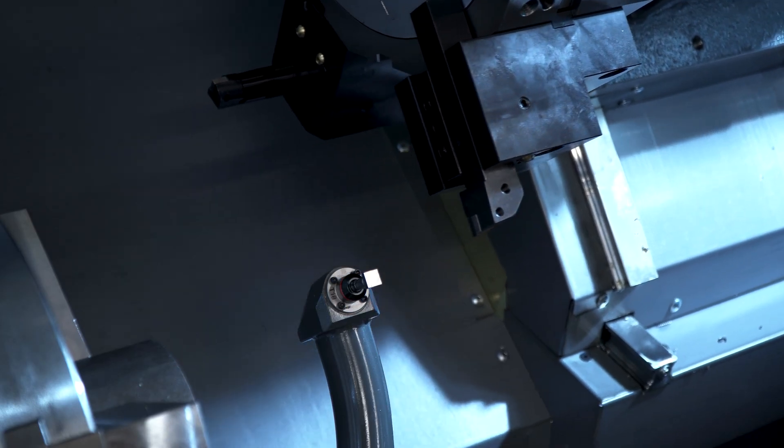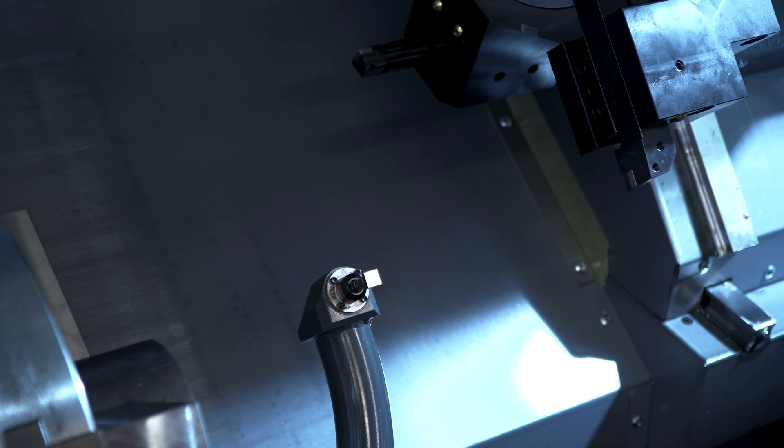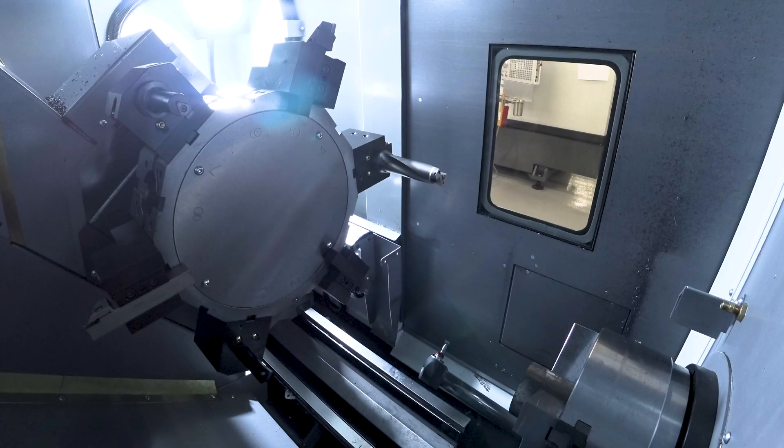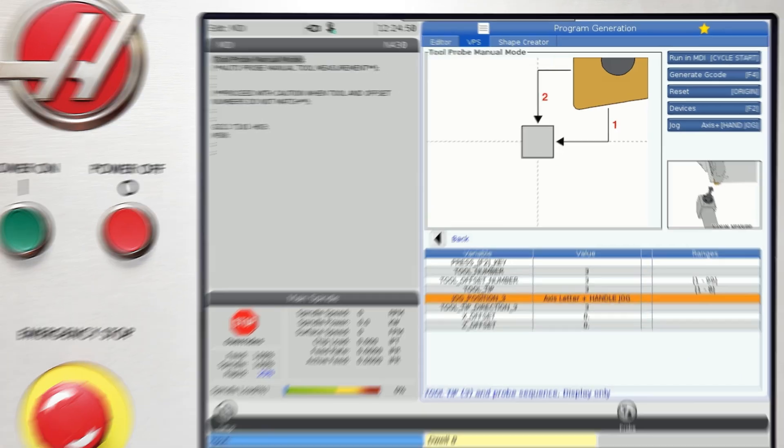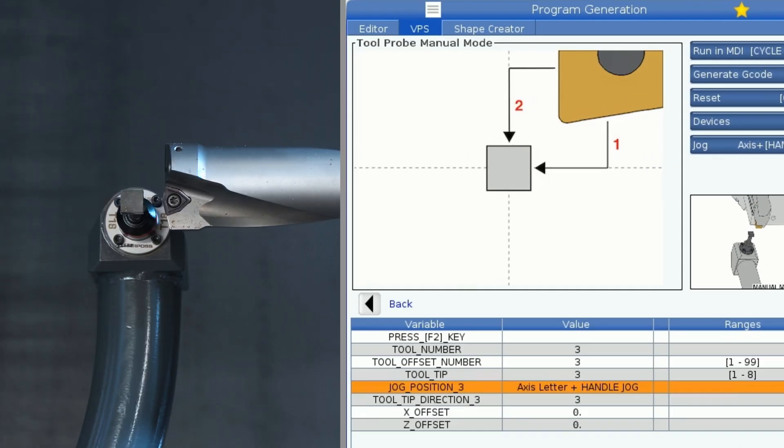We back away to get clearance. Go to MDI to index the turret to our drill, then back to the VPS template. Jog the drill in, just in front of the probe.